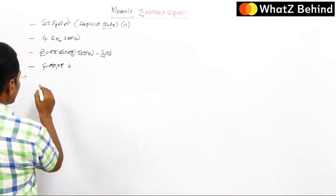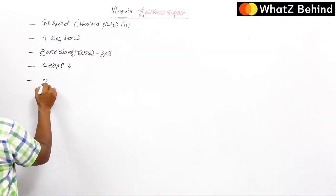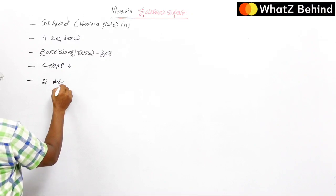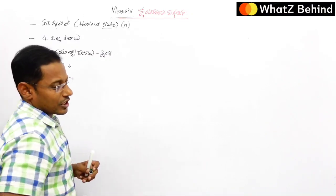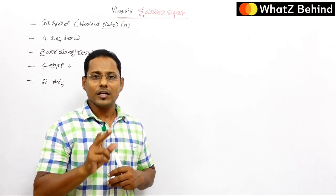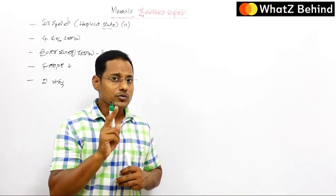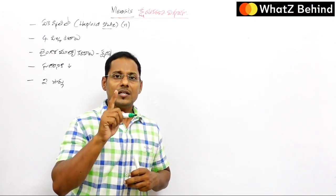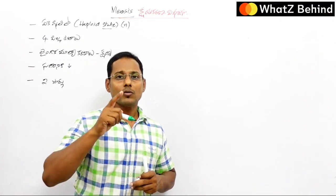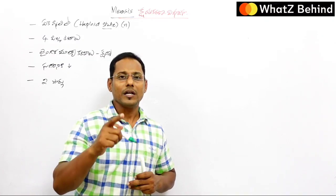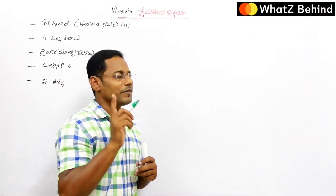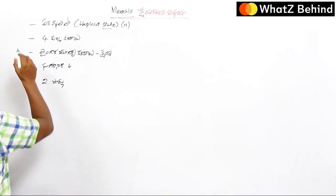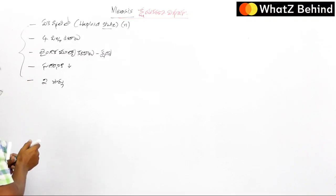In kshaykarana vibajana (meiosis), there are 2 rounds of division. Within kshaykarana vibajana, there are 2 divisions. That is, sama vibajana (mitosis/equational division) involves only 1 division, but kshaykarana vibajana has 2 rounds of division.